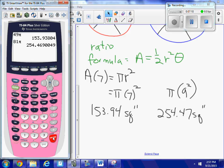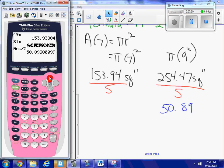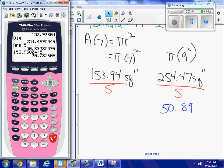So one slice of the pepperoni is this divided by 5, and one slice of the vegetarian is that divided by 5. So let's do some division here. Let's divide by 5 for the pepperoni, and I get this slice over here is equal to 30.79. And the other slice is that divided by 5, which is 50.89.